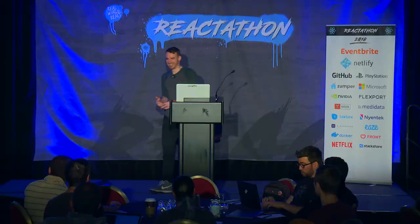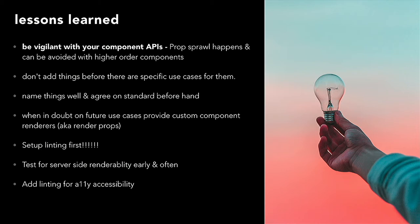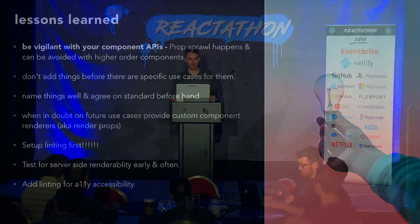The other thing we did not do is set up linting first — we moved fast but it was bad and we had a lot of things to clean up. You also want to test for server-side renderability early and often. Even if you're not doing server-side rendering now, you might someday, and if you're using components in a static site React needs to be able to server-side render them. Make sure you're not using any window objects or similar items that'll throw when running in Node. And add linting for accessibility — that's table stakes these days.